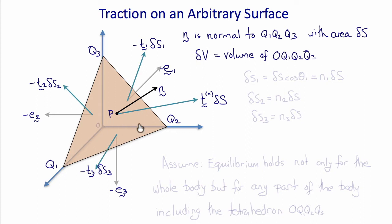Delta s is the area of q1, q2, q3. And delta s1, delta s2 and delta s3 are the areas of these individual faces. So delta s1 would be delta s times the cosine of theta1 or n1 times delta s. Delta s2 would be n2 times delta s and delta s3 would be n3 times delta s.